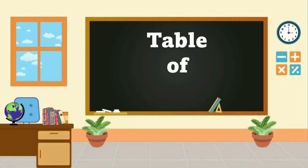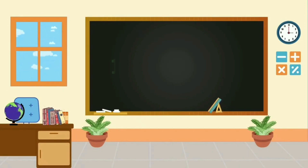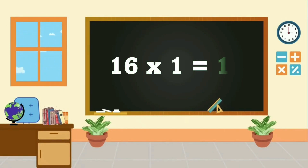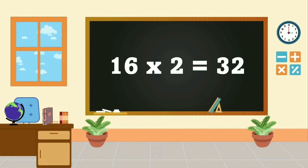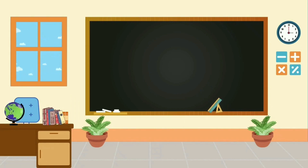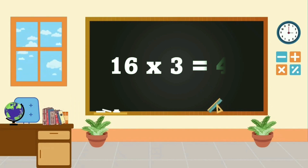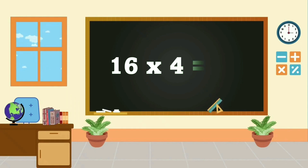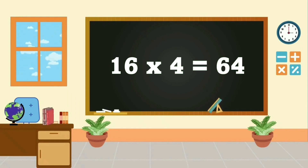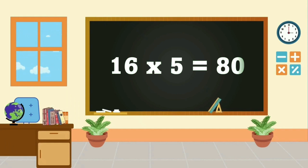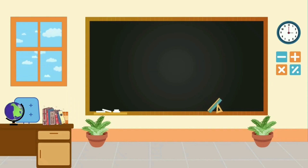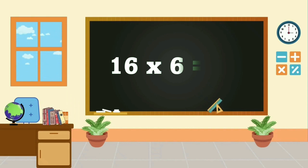Table of 16. 16 ones are 16, 16 twos are 32, 16 3s are 48, 16 4s are 64, 16 5s are 80, 16 6s are 96.